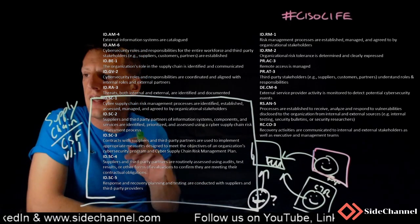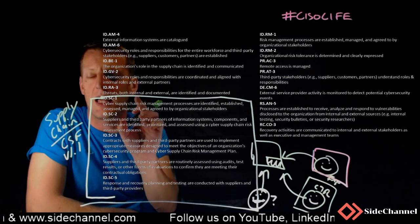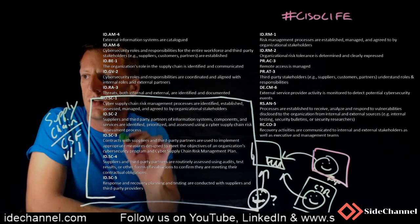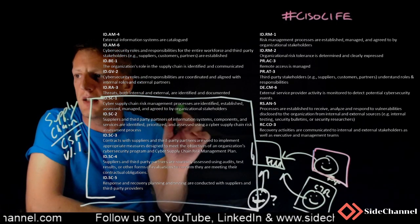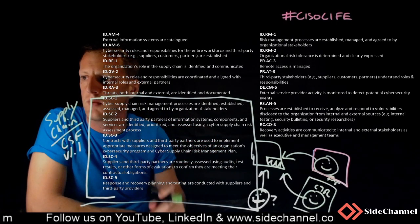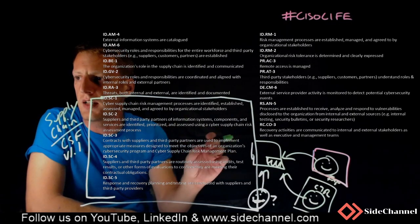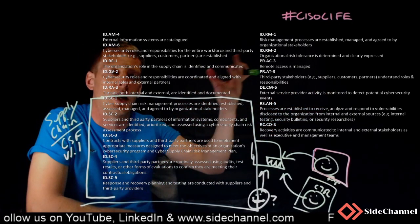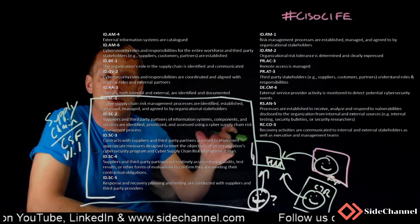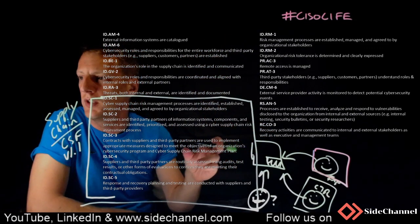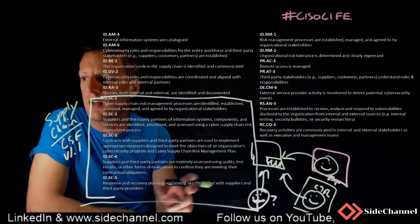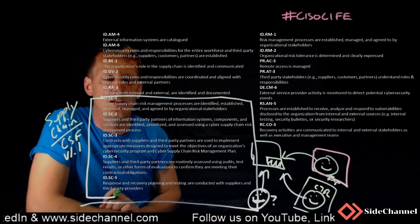These controls go over specific supply chain risks: have the processes within your supply chain risk management been identified and established? Are your suppliers' information systems components identified and prioritized, kind of like your other assets — similar to the identity asset management controls? Are they routinely assessed using audits, and is response and recovery planning being conducted with them?